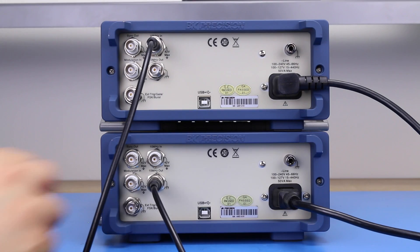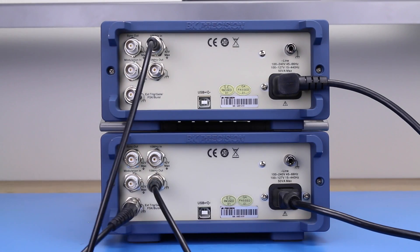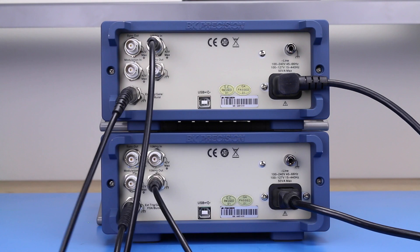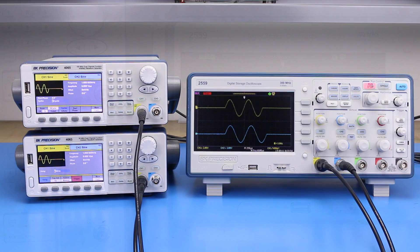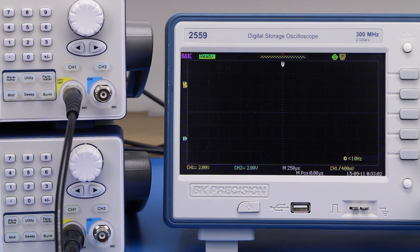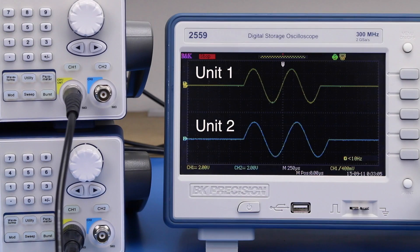Connect the external trigger BNC connector on unit 1 to the external trigger BNC connector on unit 2. Press the trig button on unit 1 to manually trigger the burst output. Unit 2 will also be triggered externally from unit 1 and output its burst output simultaneously.